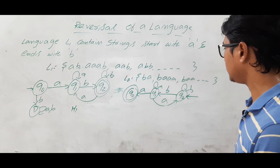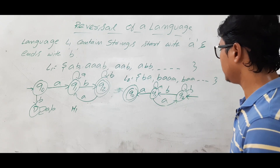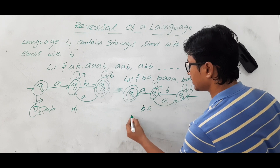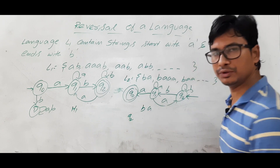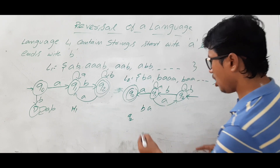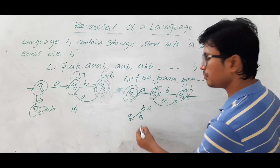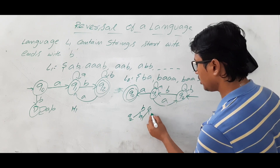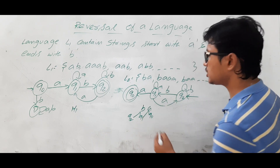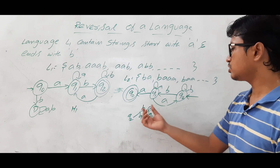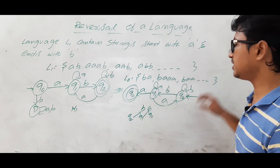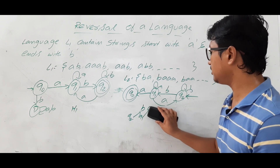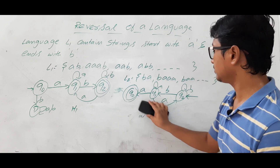Let's verify the reversed automaton accepts strings from L2. Can it accept BA? From initial state Q2 on B, we go to Q1. From Q1 on A, we reach Q0, which is now the final state. So yes, it accepts BA, which starts with B and ends with A.